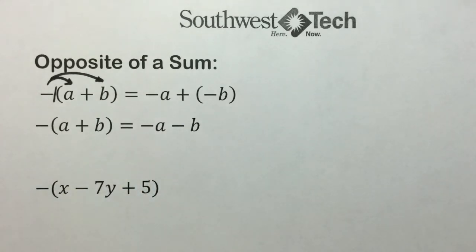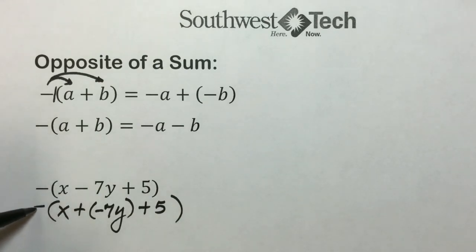To remove parentheses from an expression like this, we can first rewrite the subtraction as an addition. So instead of subtract 7y, add a negative 7y plus 5. Then we will take the opposite of this sum. Recognizing again this symbol is shorthand for negative 1, distributing negative 1 times each of these terms will result in the opposite of that sum.